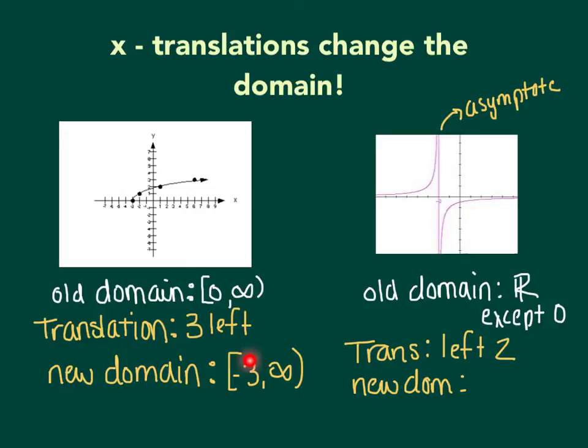On the right, you see the rational function. The old domain was all real numbers except 0, where there was a vertical asymptote. Now this graph has been translated 2 to the left. This will make the new domain again all real numbers except negative 2. So again, you see the translations show up in the new domain.